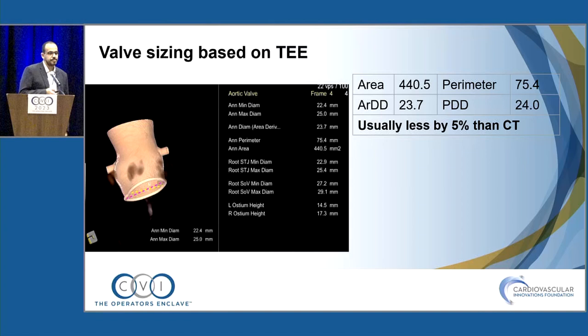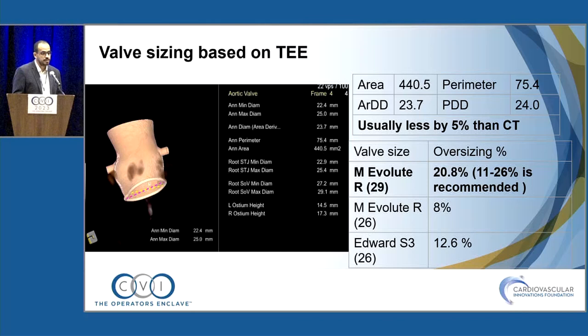At this point we went for sizing. We had three options based on these readings, and we chose the Evolut 29 as it gives us a reading within the recommended range.